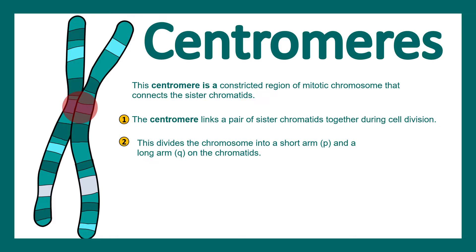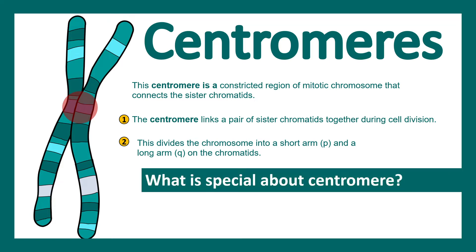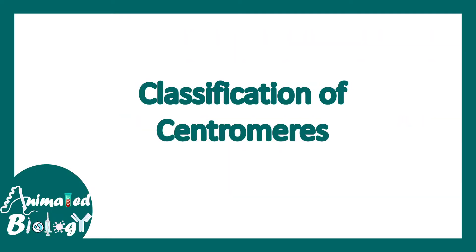The centromere also demarcates the chromosome into two different arms: the short arm, which is also known as the P arm, and the long arm, which is known as the Q arm. Centromeric organization can be seen in a metaphase chromosome; in other stages of cell division the centromeric organization is not highly visible.